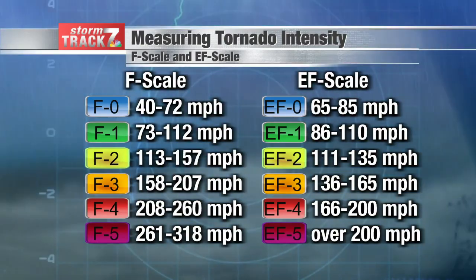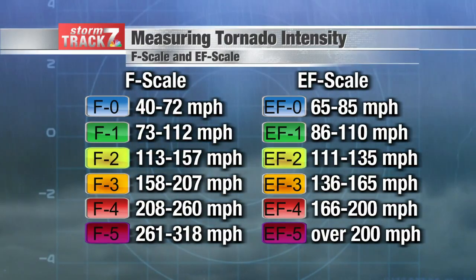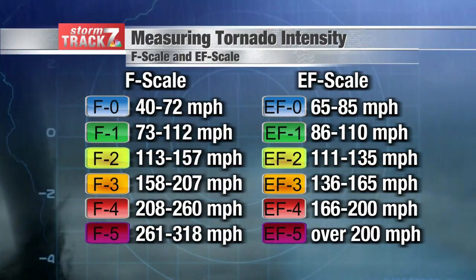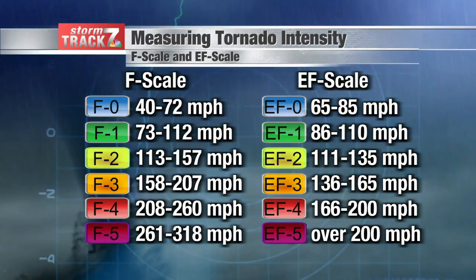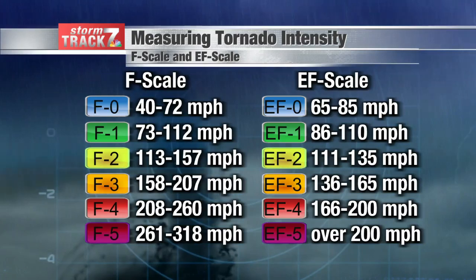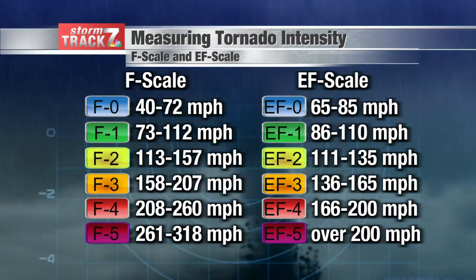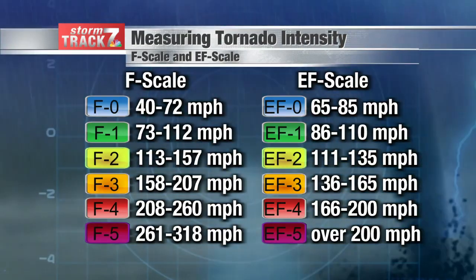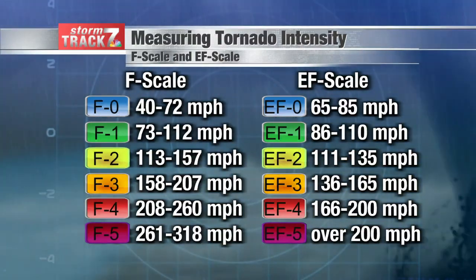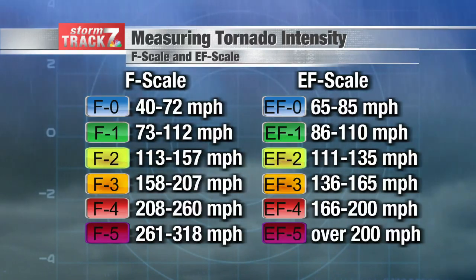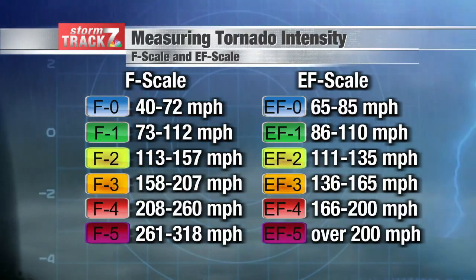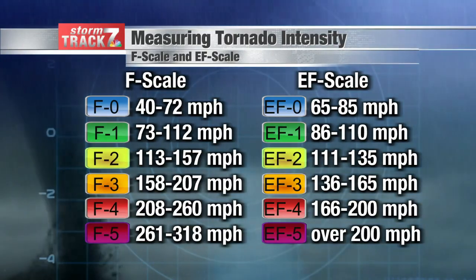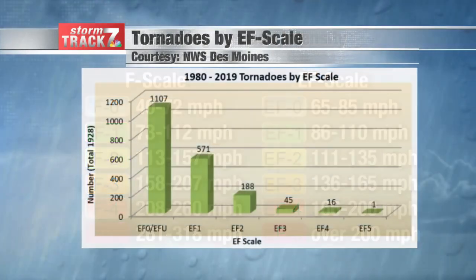That's why you see some fluctuations in the wind speeds between each of the different scales. For instance, F3 was 158 to 207 miles per hour, but on the enhanced scale that's down a bit — 136 to 165 miles an hour. It's basically related to how building structures are designed. That's why it was enhanced by the National Wind Institute, which played a pretty big role in creating the enhanced Fujita scale. So that's just a little bit of history and explanation behind what this is.